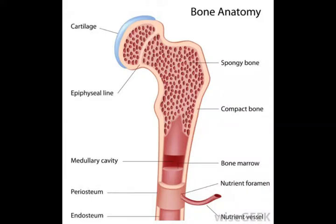The epiphyseal plate, or growth plate, is a cartilaginous or strong elastic section at the tip of the long bones of the body. Located in the metaphysis, the broader portion on each end of the bone, these sections allow the bones to lengthen as the body develops. Without this plate, the body would be unable to grow taller.